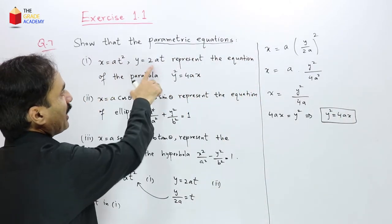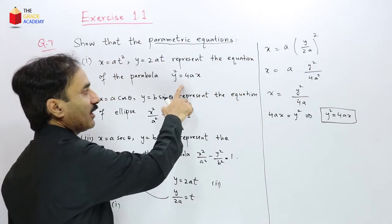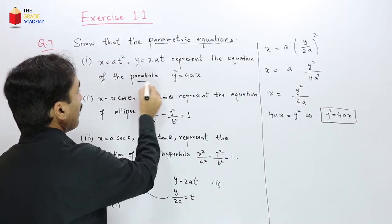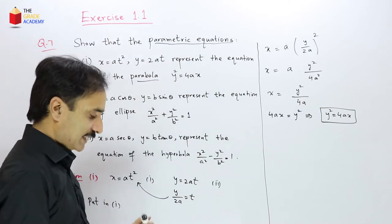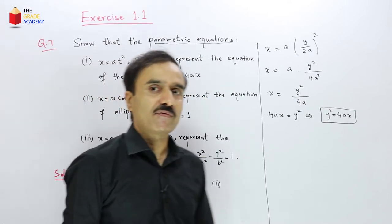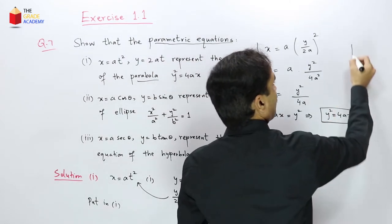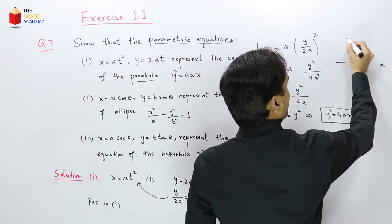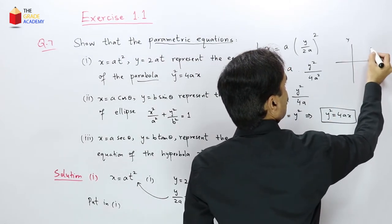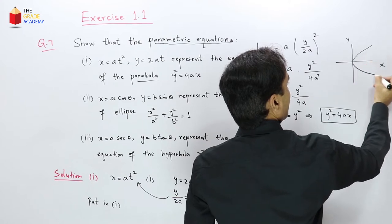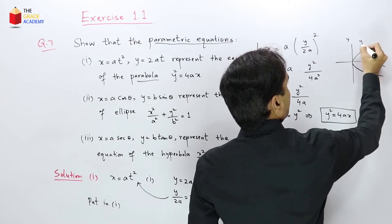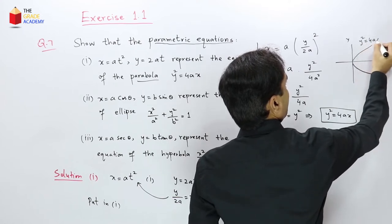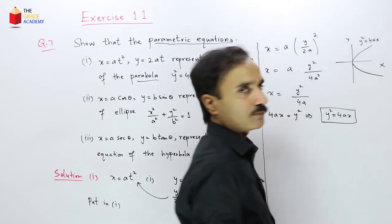So from the given parametric equations we have proved the Cartesian equation. This is a parabola — the graph of y² = 4ax is a parabola opening along the x-axis.